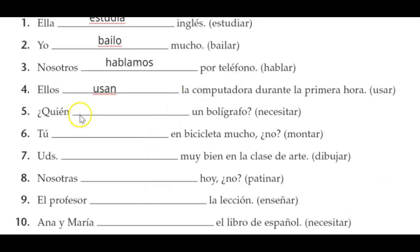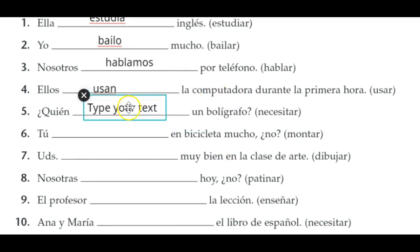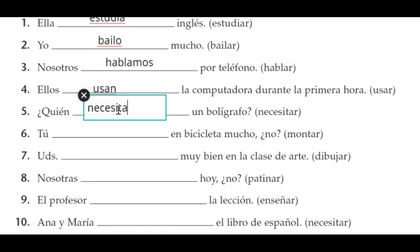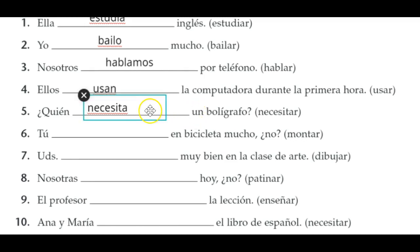With 'quien' — who — you have to think about what form to use. When you ask quien, 'who,' you're basically referring to he or she. So we say necesita. Quien necesita un bolígrafo — who needs a pen? Notice it has the S at the end in English: he needs, she needs, who needs. So it's obviously the same third-person form.